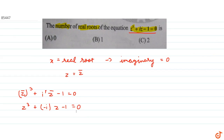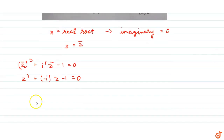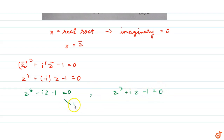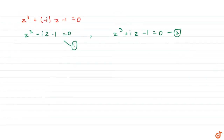Simplifying this equation, we get z³ - iz - 1 = 0. Mark this as equation 2. The given equation is z³ + iz - 1 = 0, which we mark as equation 1.